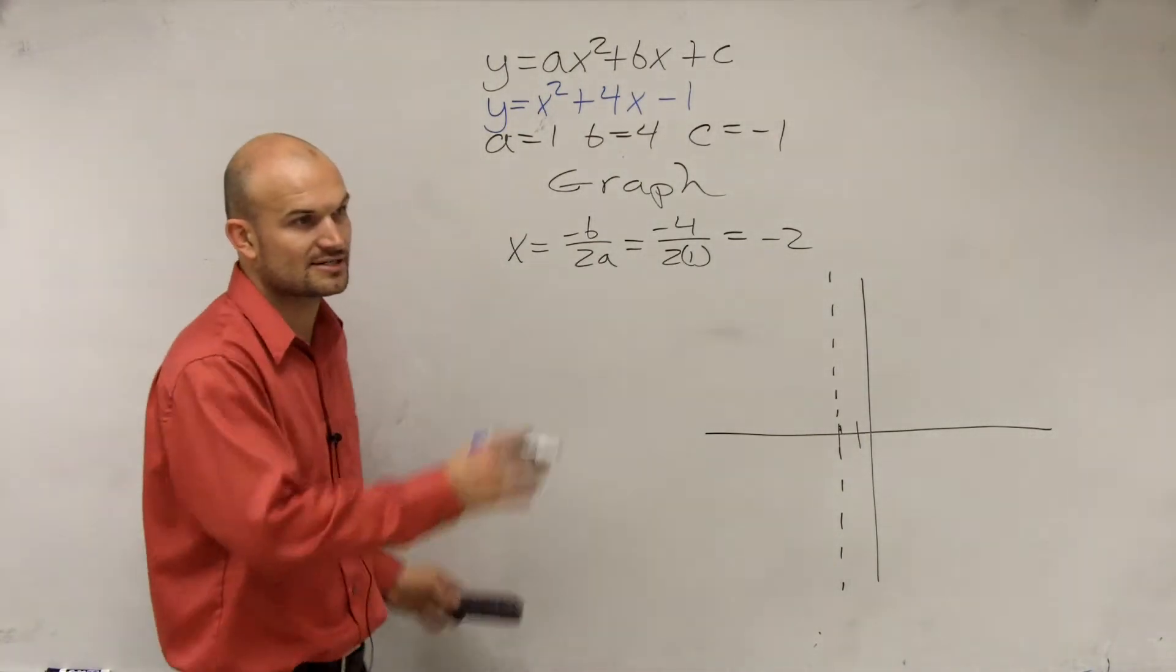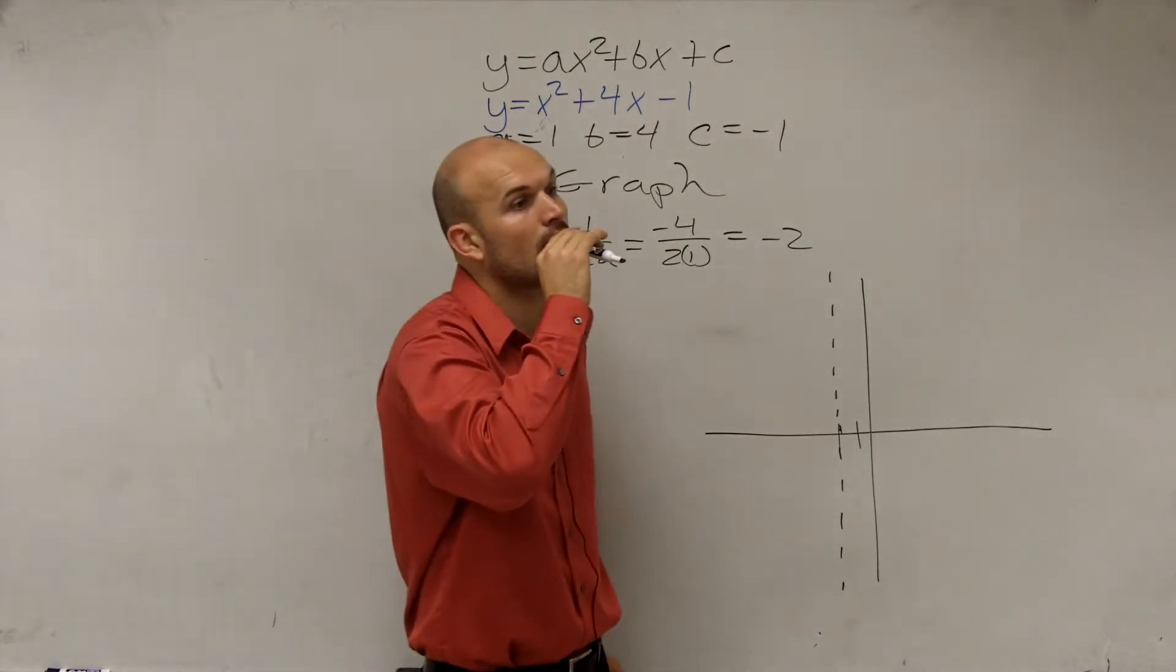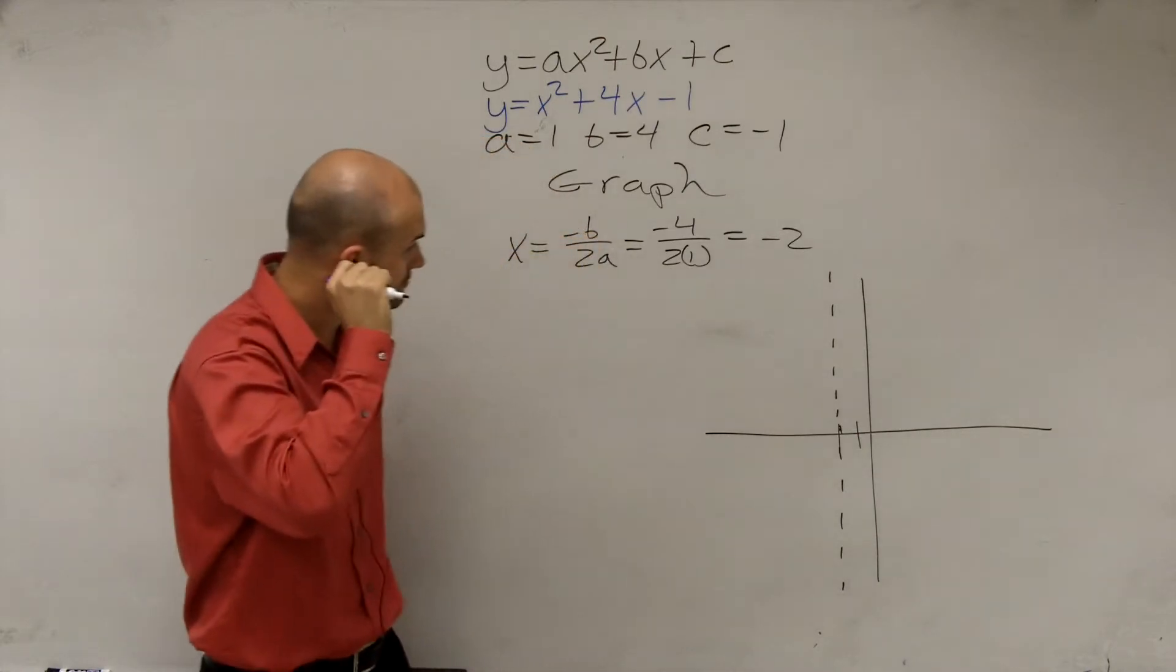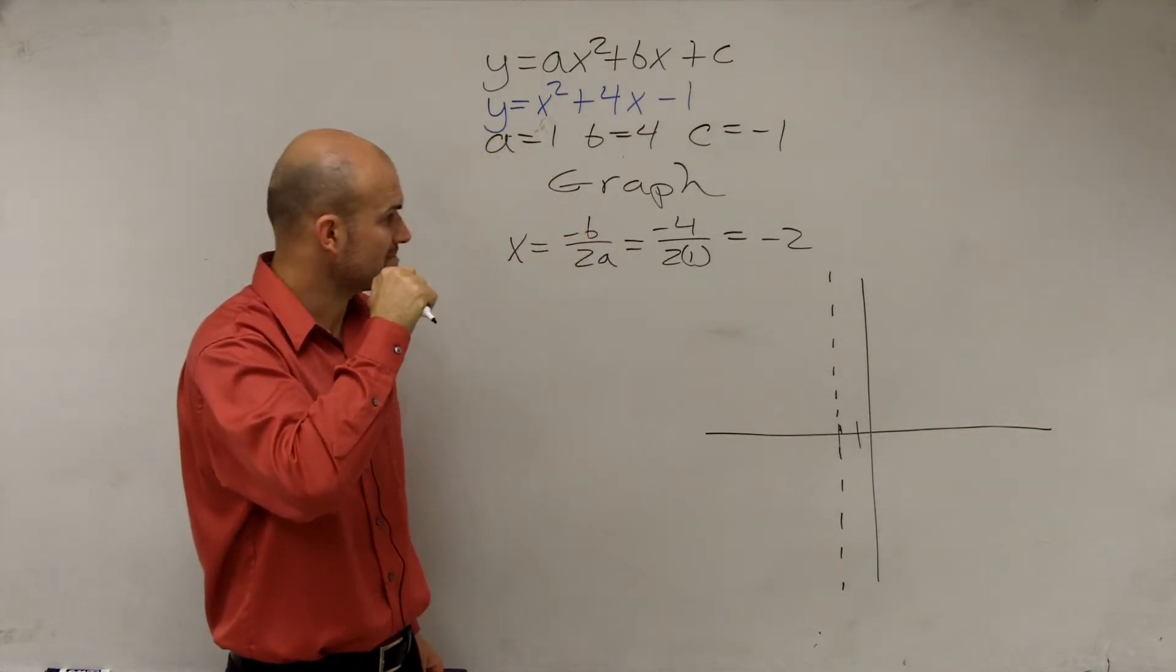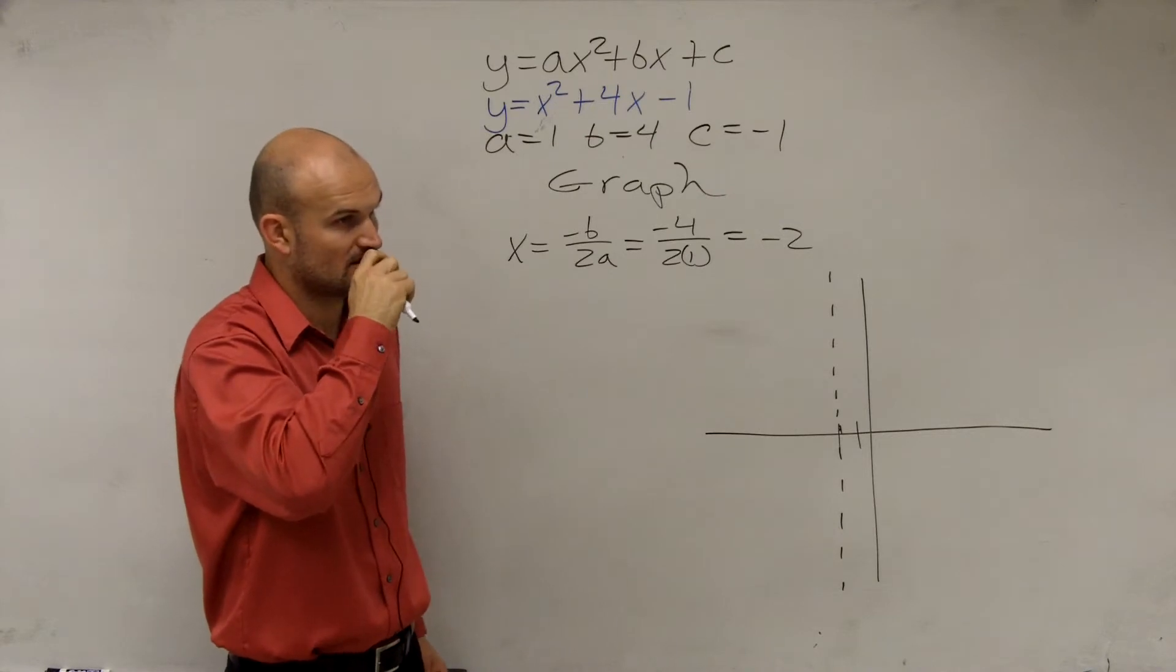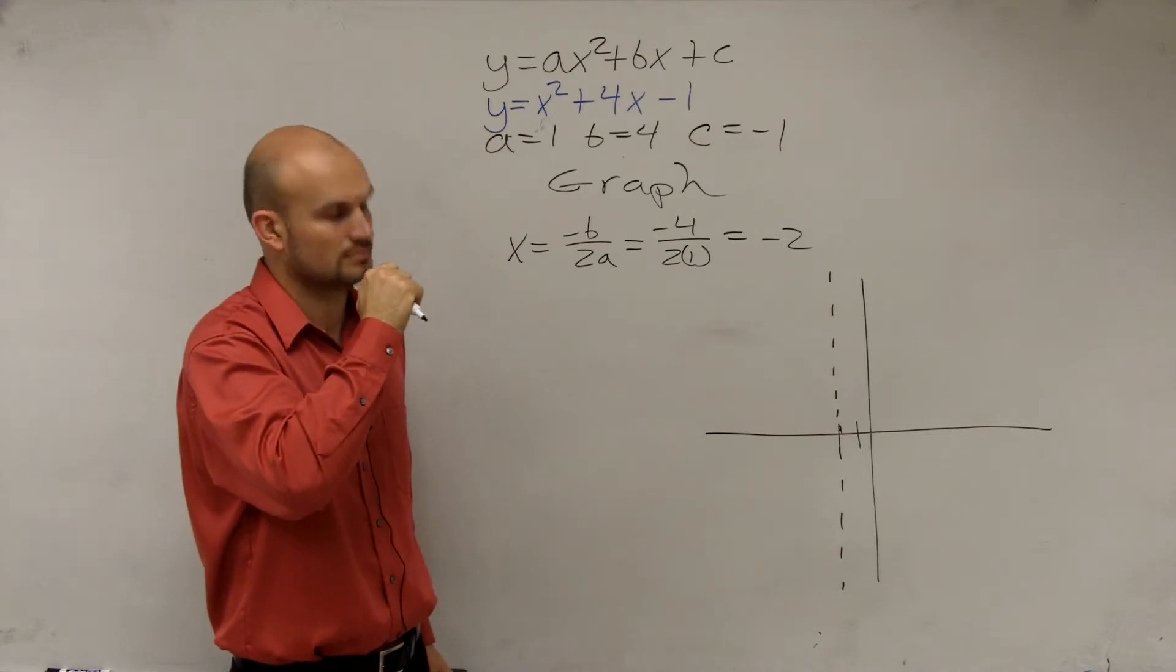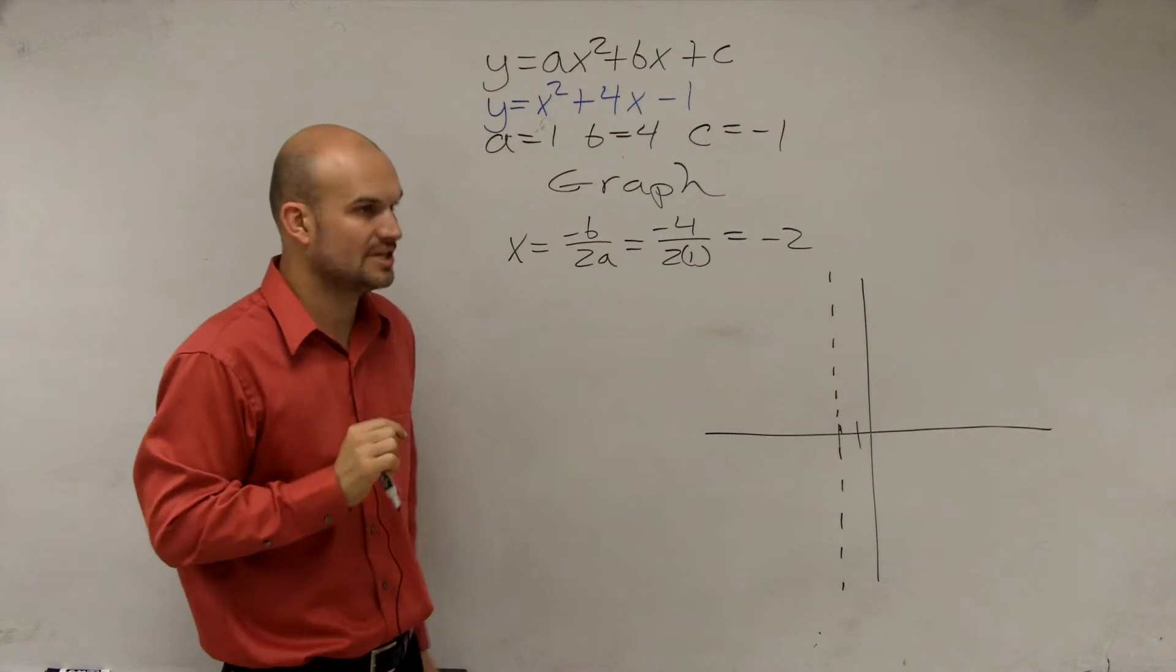It's always going to be a vertical line. Your axis of symmetry will always be vertical. I keep hearing you refer to the negative b in that equation as the opposite of b. Opposite of b, yes. So does that mean if it were 4, it would be negative 4? And if it were negative 4, it would be positive 4? Yep, got it.